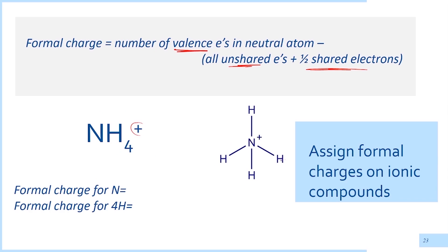Ammonium ion has one nitrogen atom bonded to four hydrogen atoms. If we count the electrons surrounding the nitrogen, we find eight electrons. According to the octet rule, atoms need to have eight surrounding electrons to reach a stable electronic configuration, except for some compounds where there are more or fewer electrons than eight.